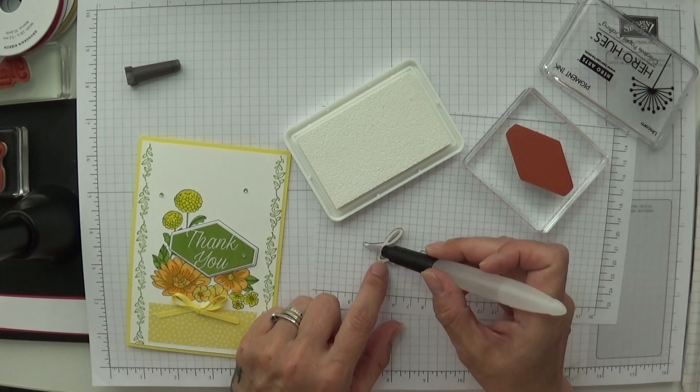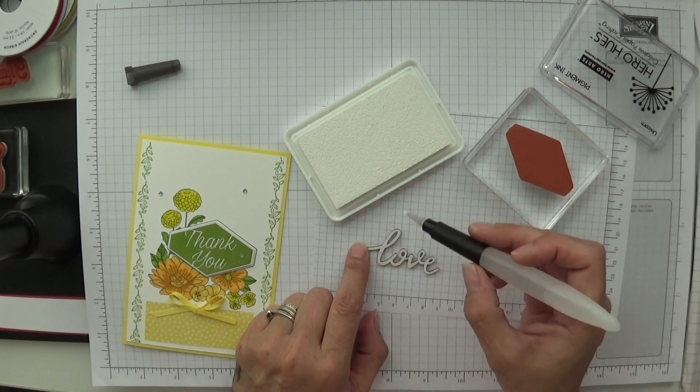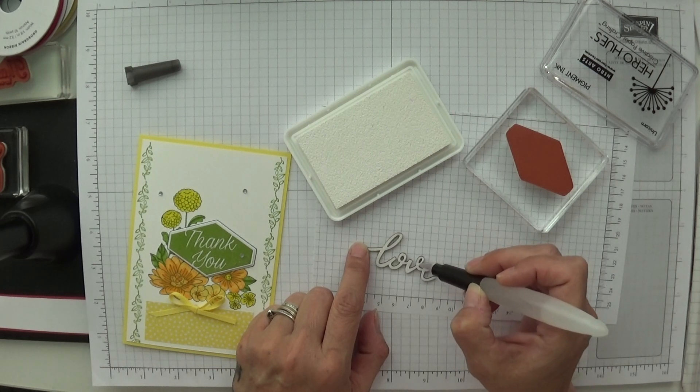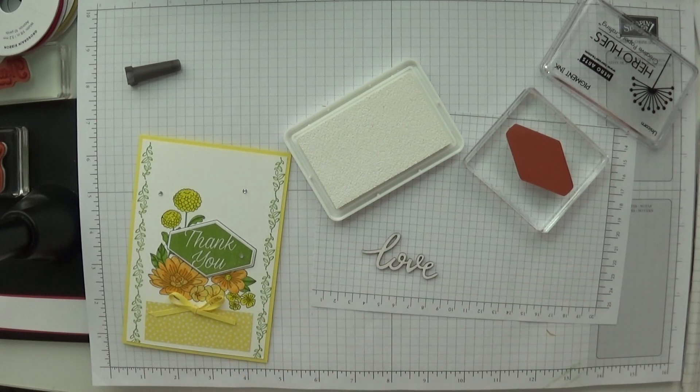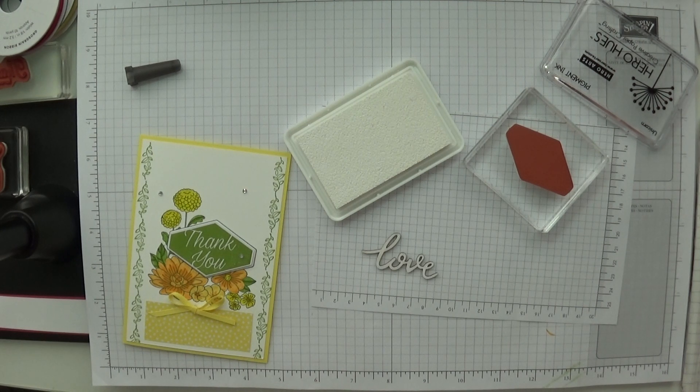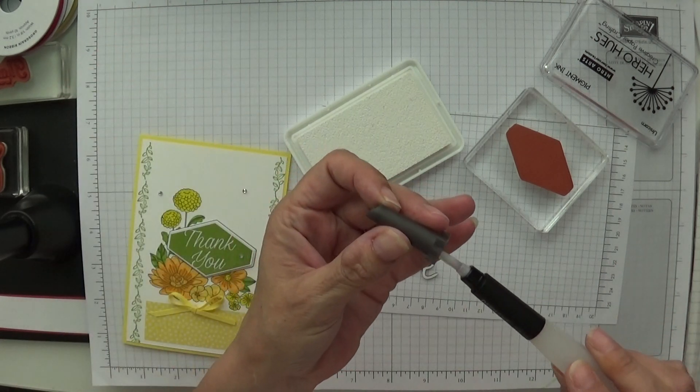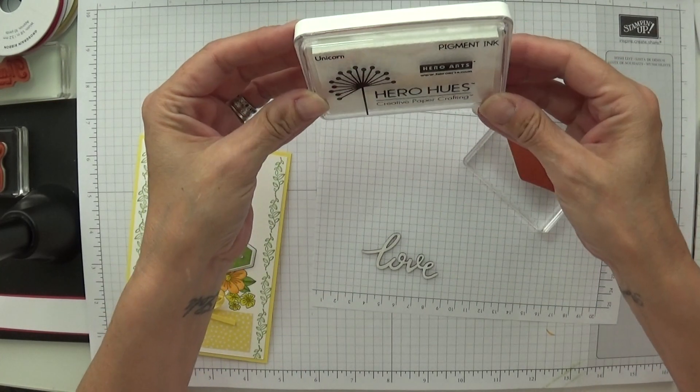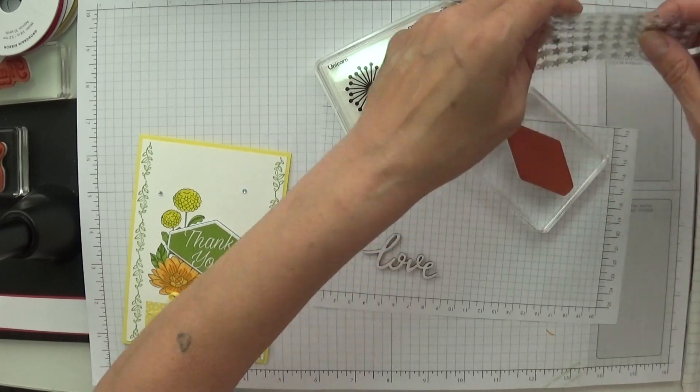While this is drying we can get on with the card. It's beautiful against that granny apple green. I think that looks absolutely stunning. If it's not quite dry then I'll heat set it with my heat tool. This is pigment ink Hero Arts Unicorn White, recommended by Jennifer McGuire, so I thought I'd give it a go and it's fabulous.